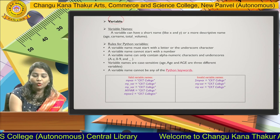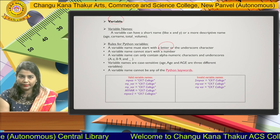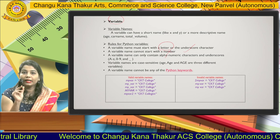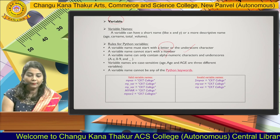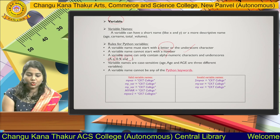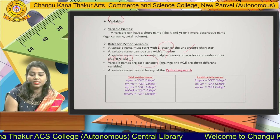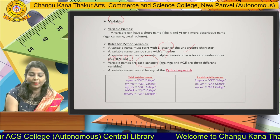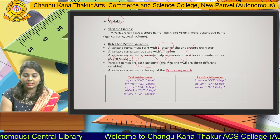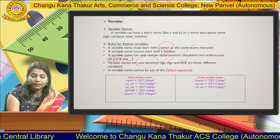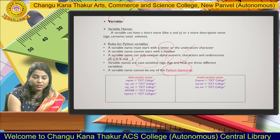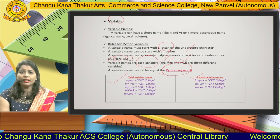The rules for variables are: it must compulsorily start with a letter; it can also include an underscore; it cannot start with a number. Variables can contain letters, alphabets, and underscores. Variables are case sensitive — for example, 'age', 'AGE', and 'Age' are three different variables. Also, Python keywords cannot be used as a variable name. I have specified some valid and some invalid variable examples.